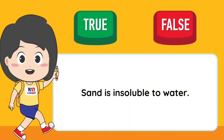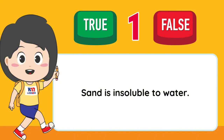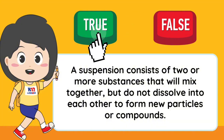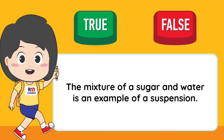True or false: Sand is insoluble in water. A suspension consists of two or more substances that will mix together but do not dissolve into each other to form new particles or compounds. The mixture of sugar and water is an example of a suspension.